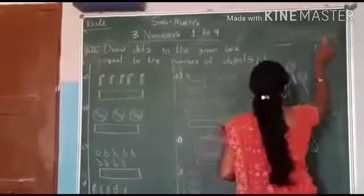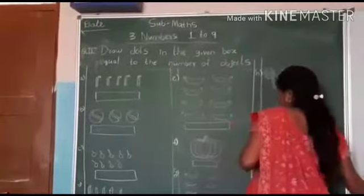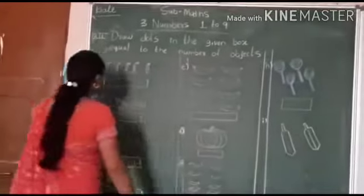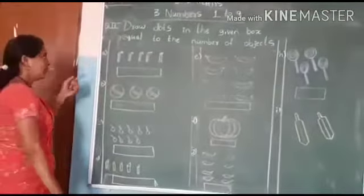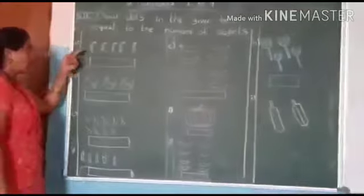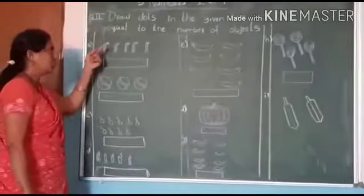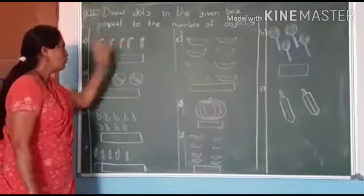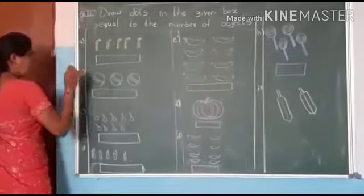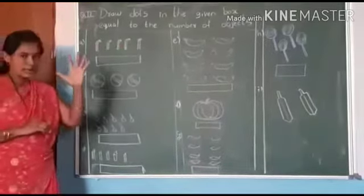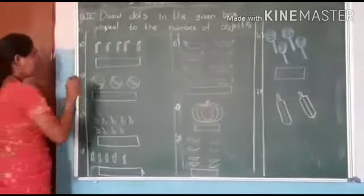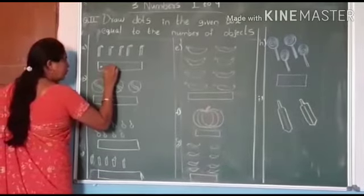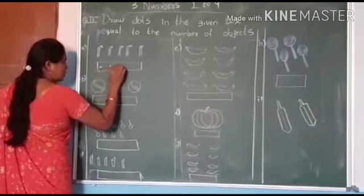We will go to the first one. See, how many objects are there here? One, two, three, four, five. Five objects are raised. We have to put five dots.